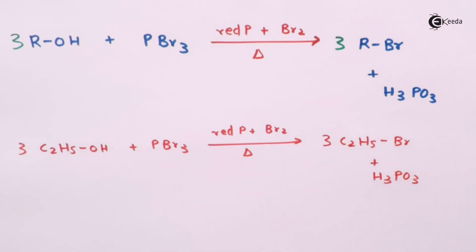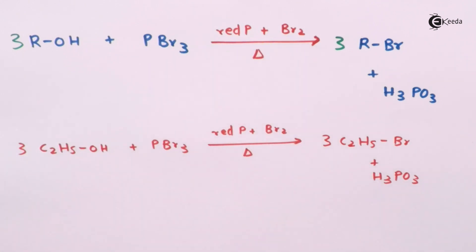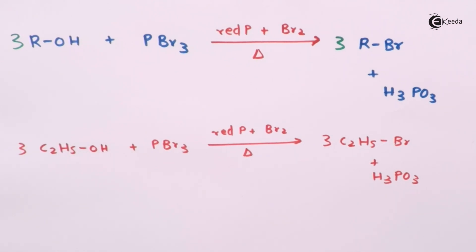Similarly, to prepare alkyl iodide using PI₃, we use red phosphorus along with I₂ (iodine molecule) to generate PI₃ in situ. The rest of the reaction is the same as the general reaction discussed earlier.